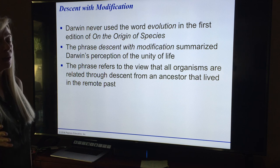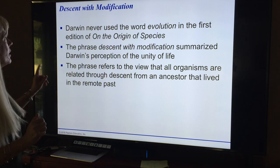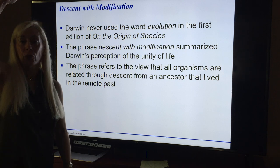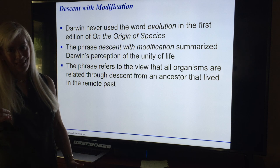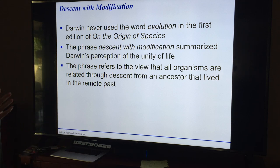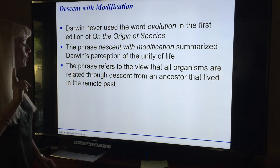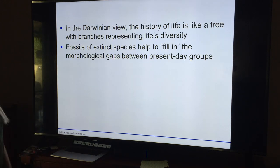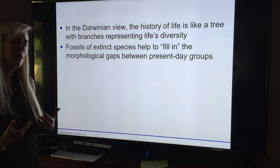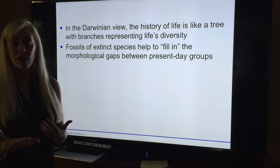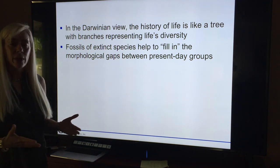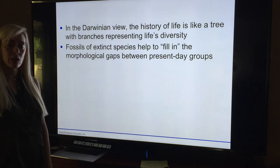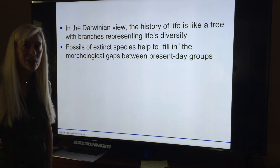The phrase 'descent with modification' summarizes Darwin's perception of the unity of life. It refers to the view that all organisms are related through descent from an ancestor that lived in the remote past. Fossils help tie that in. A lot of people who have problems with evolution say there's no fossil evidence, but if you go beyond vertebrates — when you get into squishy things — they don't fossilize, so you won't see the full history.